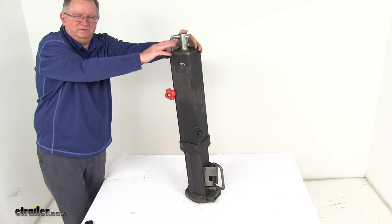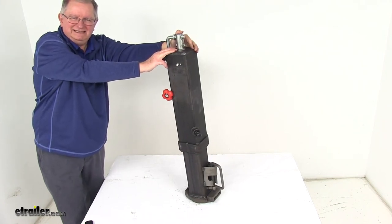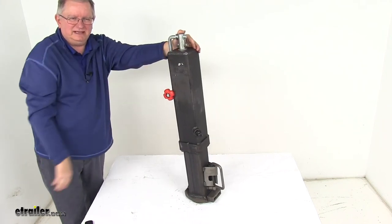That should do it for the review on the RAM Square Topline Gooseneck Coupler, 6-inch height adjustment, and a 30,000-pound weight capacity.